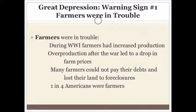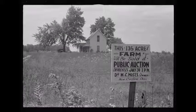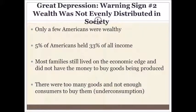Among the warning signs we missed: farmers were in serious trouble. Overproduction had led to a drop in farm prices, and because they couldn't sell their goods, many farmers were unable to pay their debts. Banks foreclosed on them, leaving farmers with no farm and no other skills, forced to go to cities looking for jobs that weren't there. At the time, 25 percent of Americans were farmers — a quarter of the nation going through this severely damaged the economy.